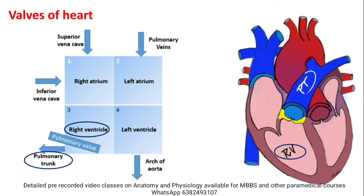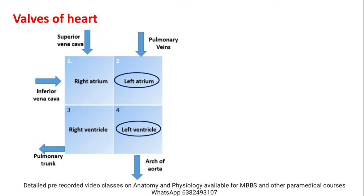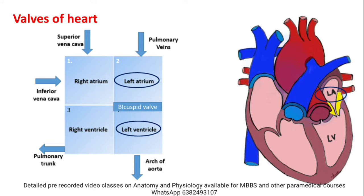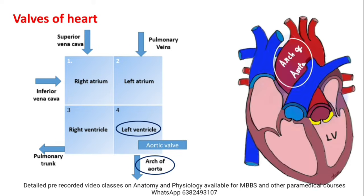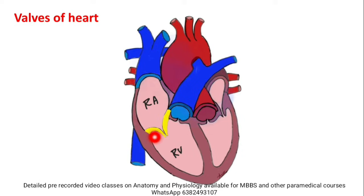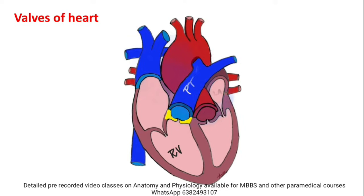The valve connecting the right ventricle to the pulmonary trunk is the pulmonary valve. There is also a valve connected to the left ventricle. Each chamber and blood vessel connection is regulated by a valve — a door-like structure controlling blood flow.